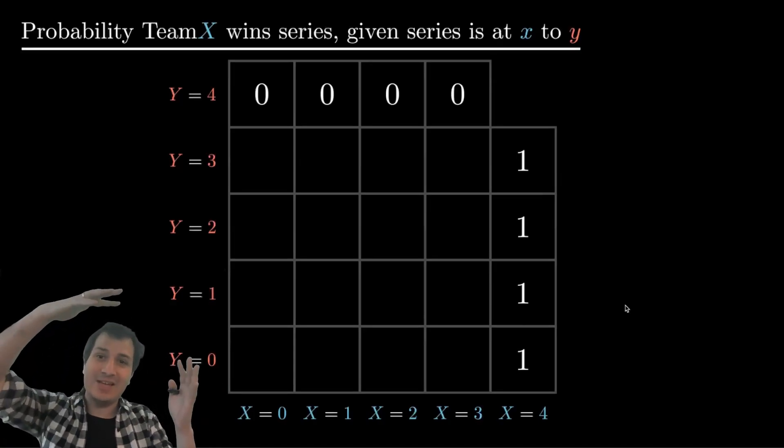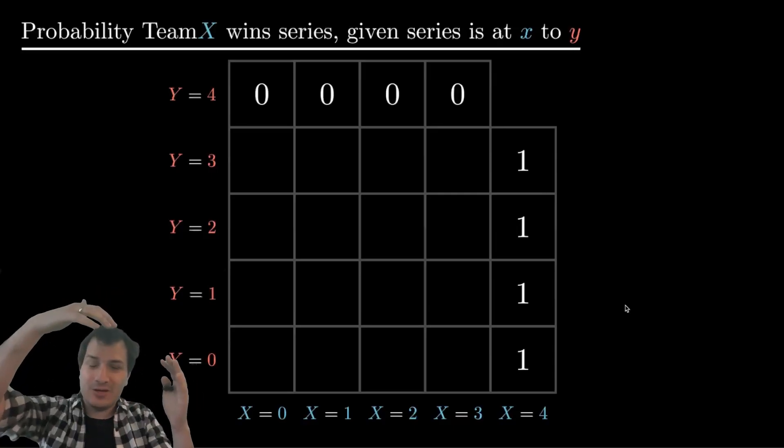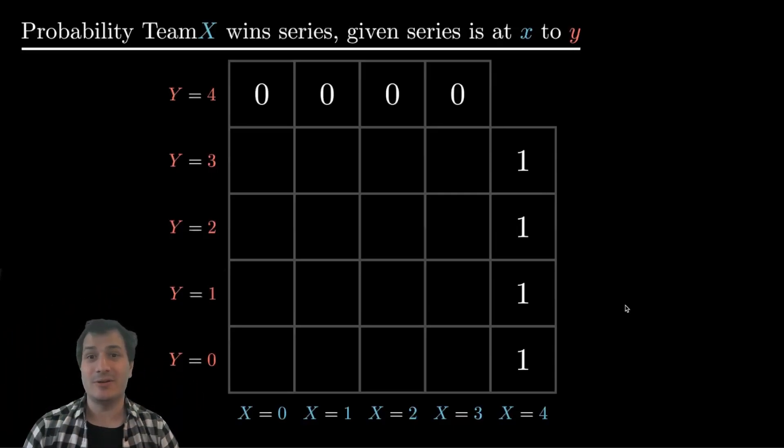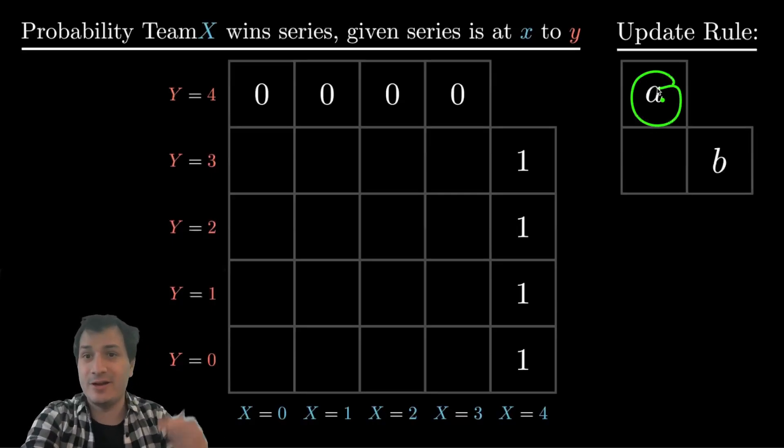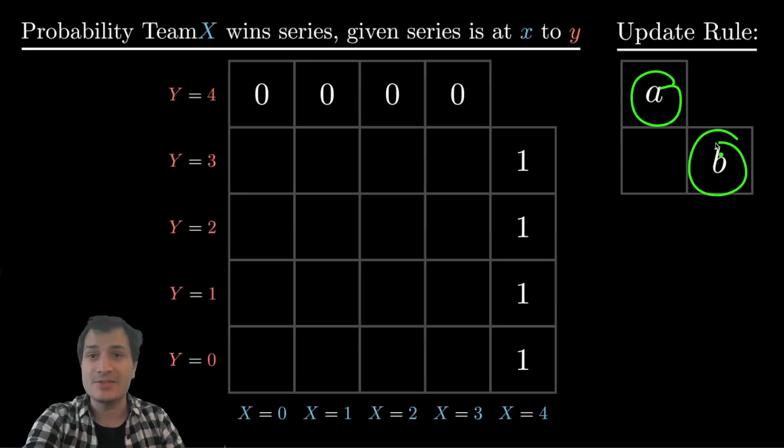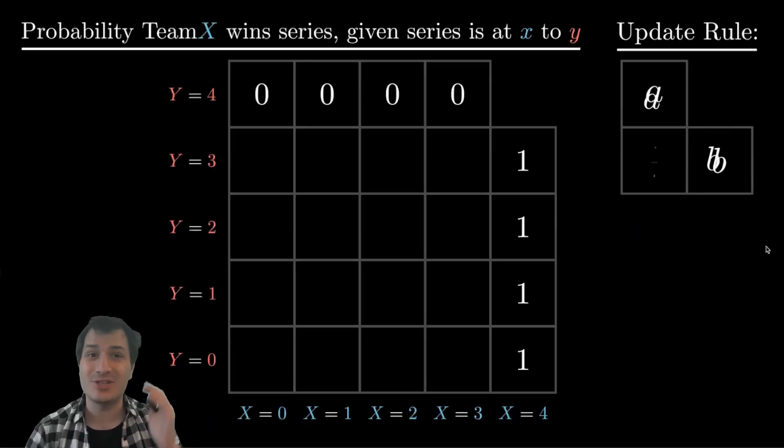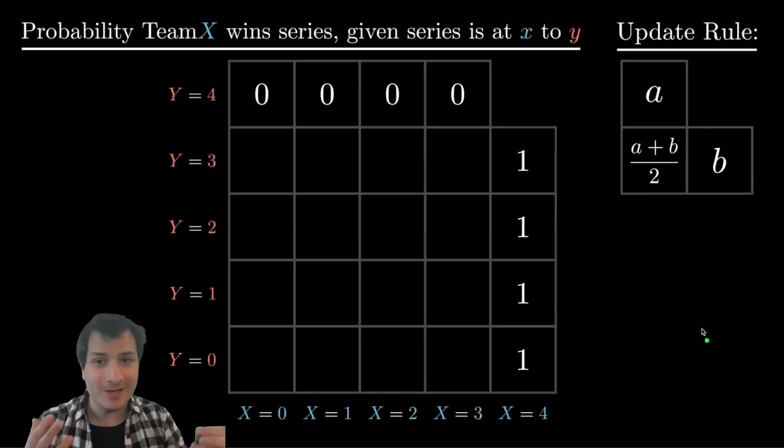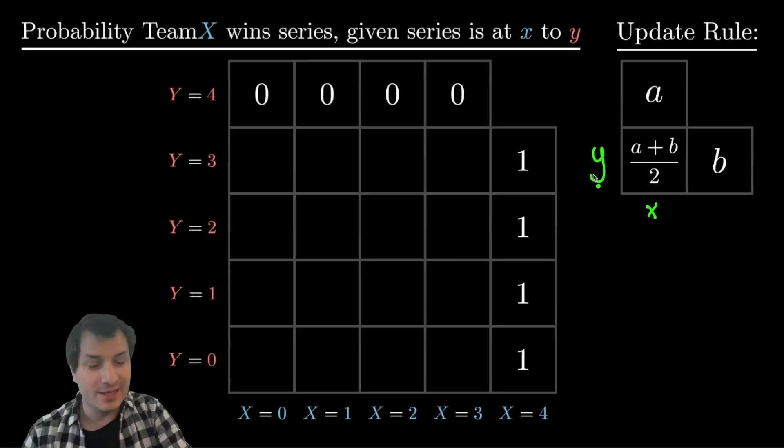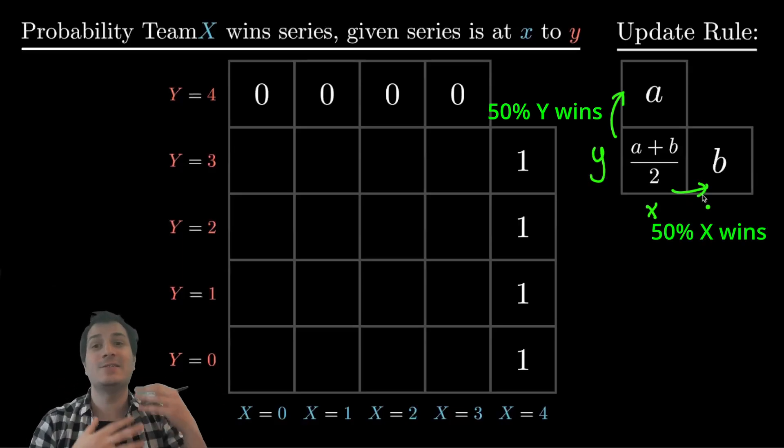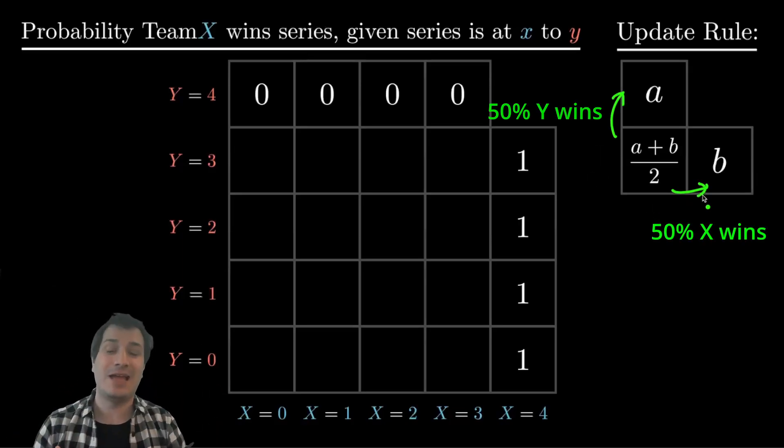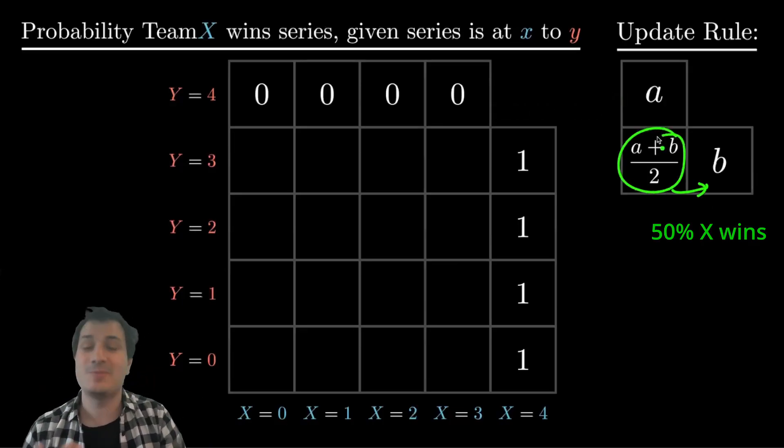And now we're going to take these known values on the edge. And we're going to sort of work our way backwards, solving iteratively, going all the way back to x equals zero, y equals zero. And the update rule that lets us do this is very simple. Whenever you have three boxes sort of arranged in an L shape like this, with some value A over here in the upper box, and some value B over here in the right box, there is a very simple formula to figure out what goes in the box in the corner. And that simple formula is just A plus B over two. And the reason this update rule works is that if you're at the location x, y, then half the time you will go up to this location where the probability of winning is A, and half the time you will go to this location where the probability of winning is B. So if half the time your chance of winning is A, then half the time your chance of winning is B, then what is your chance of winning? Well, it's A plus B divided by two.